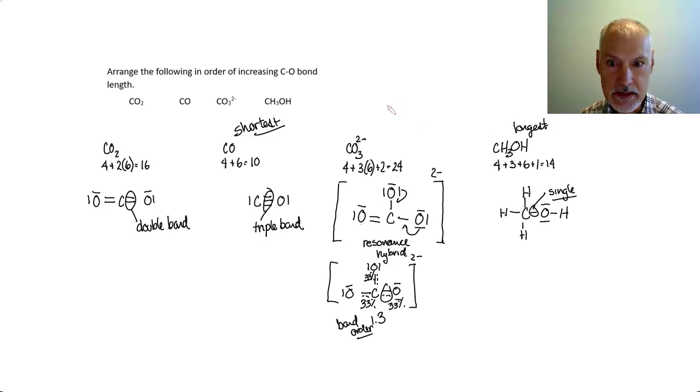So if I look at listing them in order, carbon monoxide would be at the shortest end, moving up to my CH3OH. Now to separate the other two. If I look at a double bond versus one and a third bonds, a double bond would be a shorter bond. There's greater number of electrons to pull the nuclei in. So that's going to be here, followed by the carbonate ion.